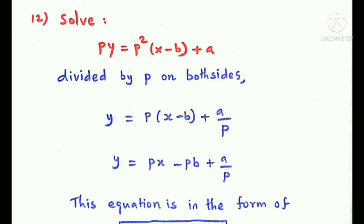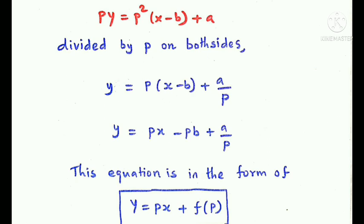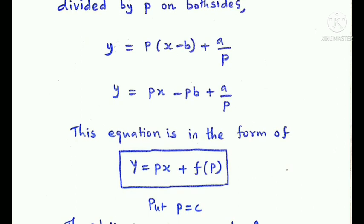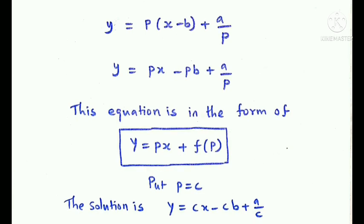Next question: solve py = p²(x - b) + a. Dividing both sides by p gives y = p(x - b) + a/p, which is of the form y = px + f(p). The solution is y = cx - cb + a/c.